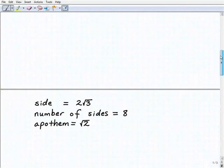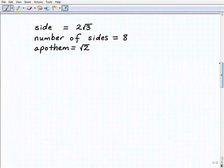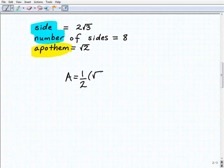All right, so let's go ahead and take a look at our second problem. Same thing. So we already have our apothem, and we're going to use these two pieces of information to find our perimeter. So the area is going to be equal to one-half, the apothem, which is the square root of 2, times the perimeter.